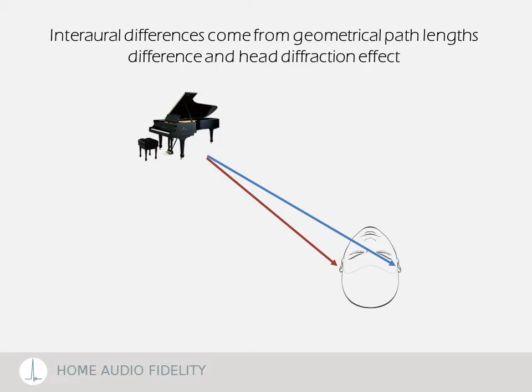In a simplified approach, the sound pressure difference between ears can be expressed by a delay. This delay comes from the path length difference between the source and each ear. On top of this, our head and torso are like a sound barrier that lowers the sound at the opposite ear. This effect is visible in the frequency domain where the shadowing is more effective at high frequencies and when the sound wavelength falls below the head dimensions.